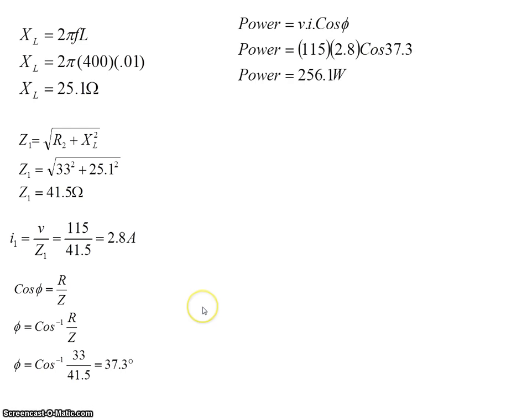The power consumed by the circuit. In an AC circuit the true power is VI cosine φ. So that's 115 volts by the 2.8 amps which we got from here, by the cosine of 37.3. And that gives me 256 watts.